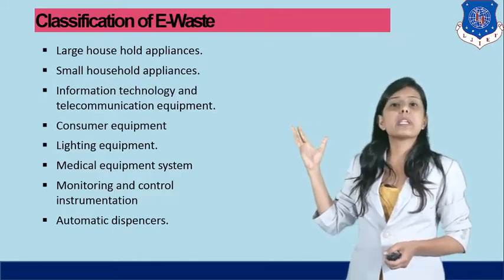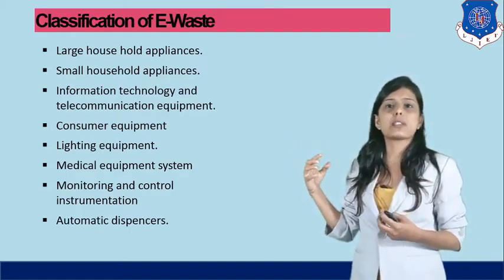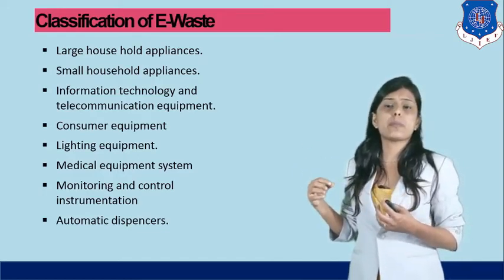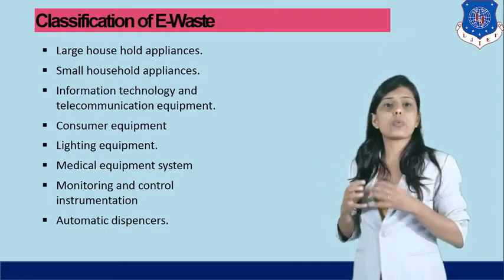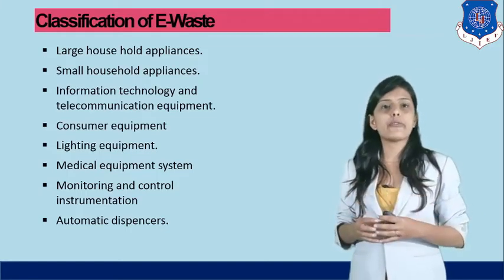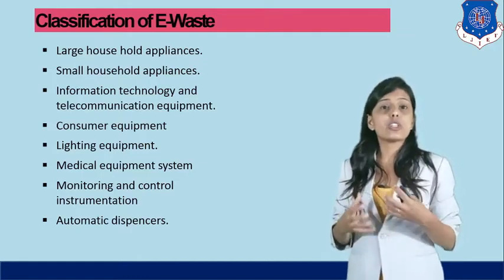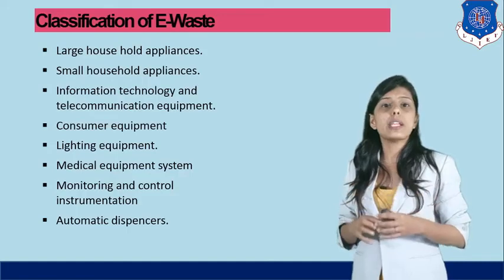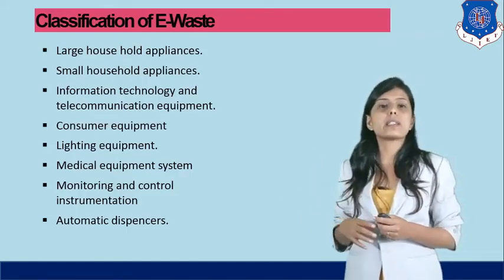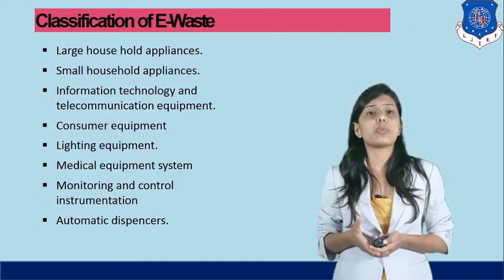Mobile phones, information technology and telecommunication equipment — for example, a computer — are part of electronic waste. Consumer equipment, lighting equipment, and medical equipment systems also fall under this category. Anything which contains electronic equipment is known as electronic waste, and when you dispose of it in the dustbin, that creates electronic waste. Industries throwing components into the environment also constitute electronic waste.